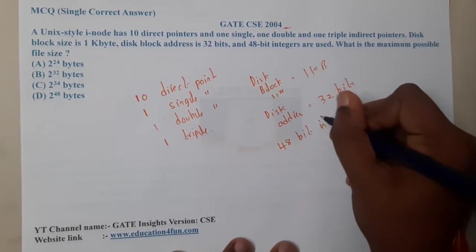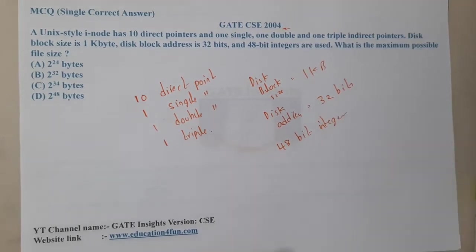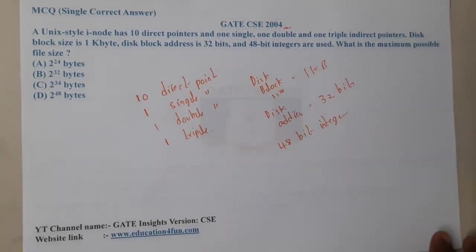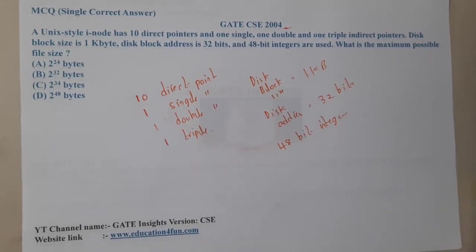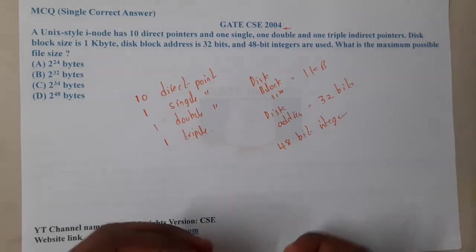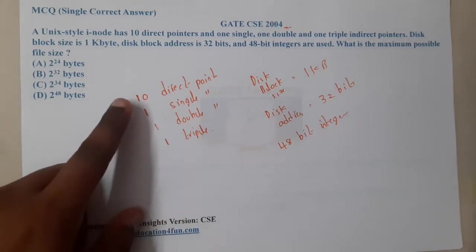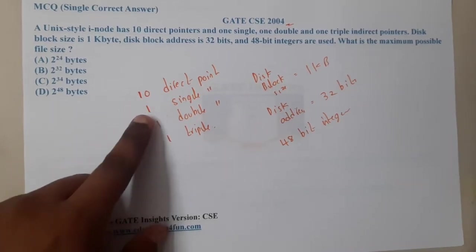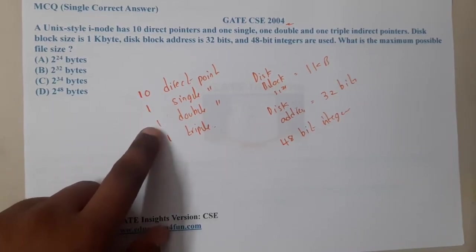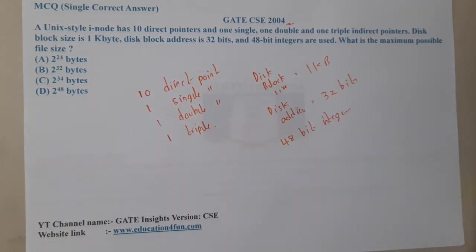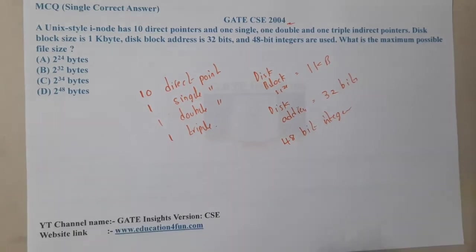48-bit integers are used. They are asking: what is the maximum possible file size? These questions are really easy — the only thing is you should understand what exactly they are asking.